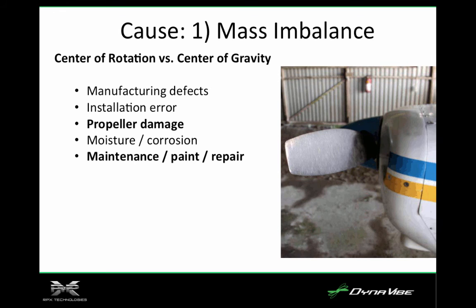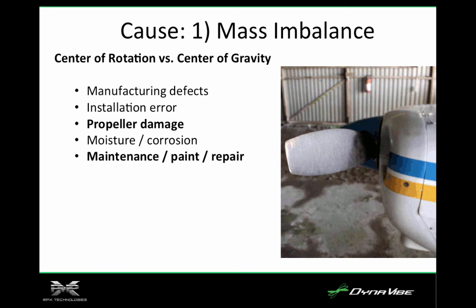This is another mass imbalance. You can see the two images superimposed, and it's fairly obvious that if you look at the blade tips, one of them has been filed down. That's fairly typical to repair damage, but what happens is that throws the mass of the blade out of position because there's actually less metal on one tip than the other.